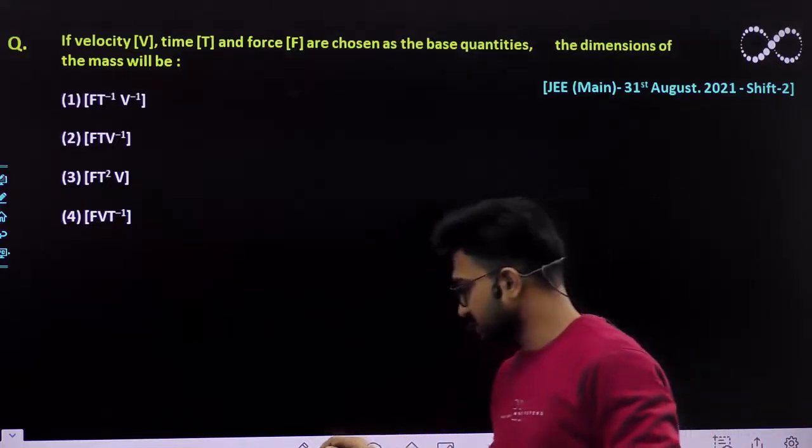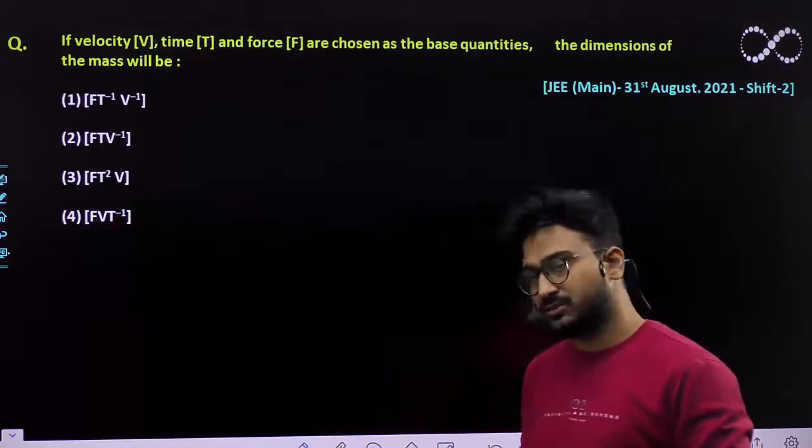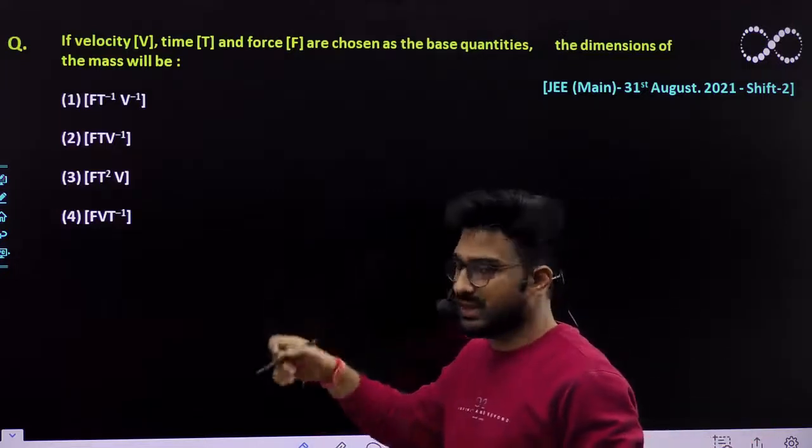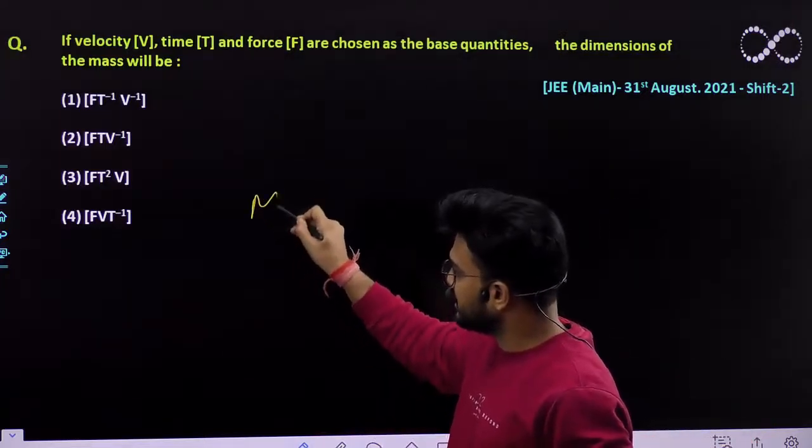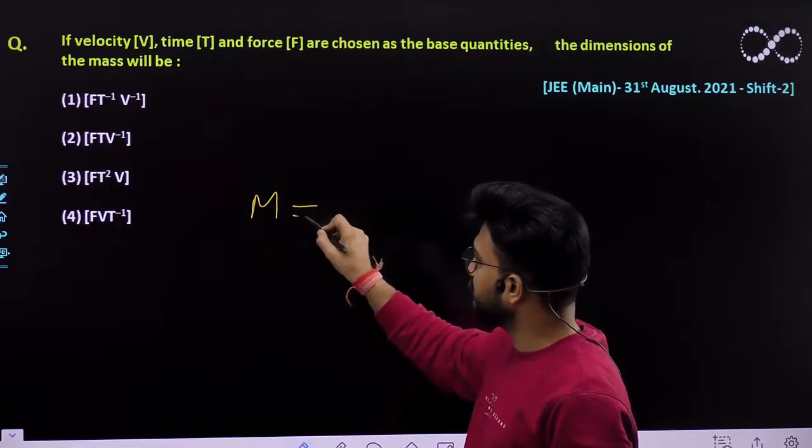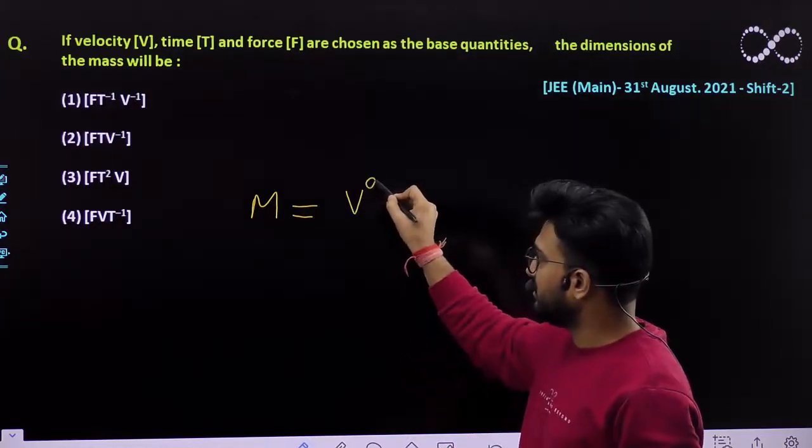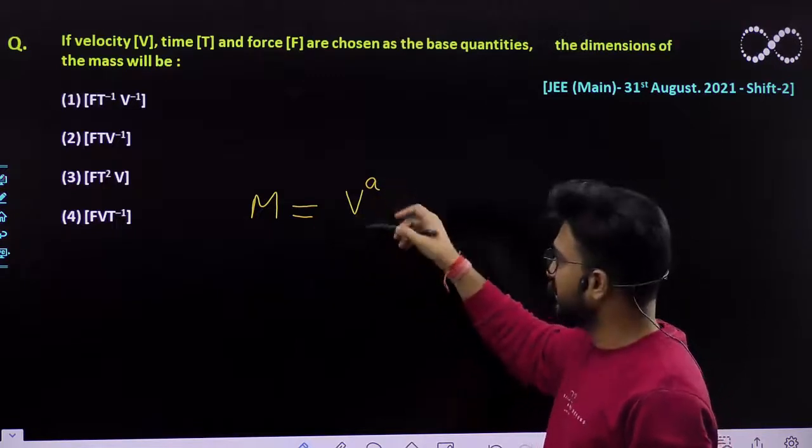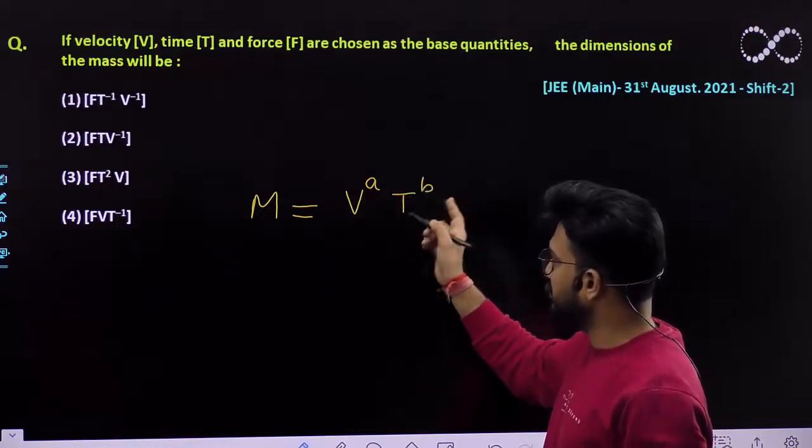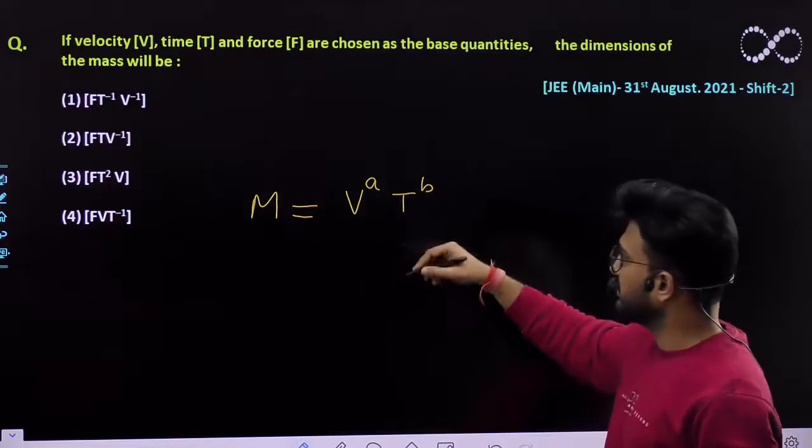This is a dimensional analysis question in which you have been given that mass is dependent on velocity - let its power be a - and time, let the power to which it is dependent be b.